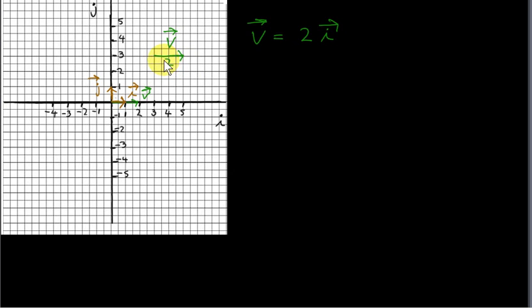So that's what we do for all vectors, no matter where they are. We have a vector somewhere, and we imagine moving it so that its tail is at the origin, then name it in terms of its i and j components.